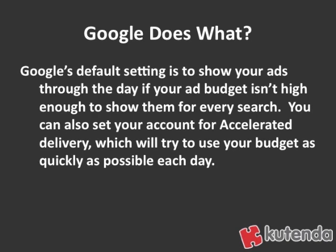If it would cost you $100 a day to have your keyword show up every time based on average click volume, and your budget was actually only $10 a day, your ad would show about 10% of the time. By default, Google is going to spread that out throughout the day.